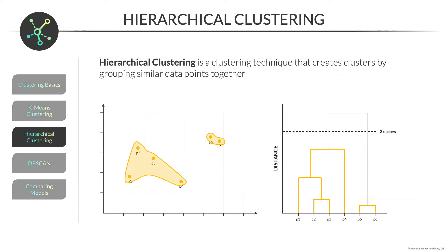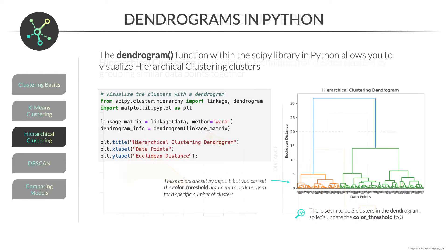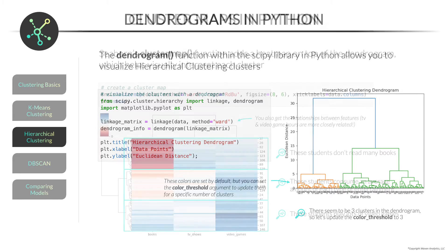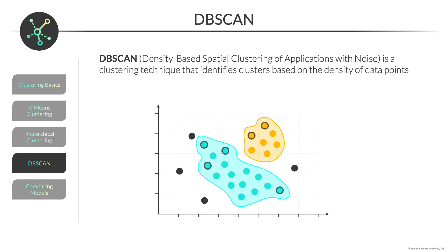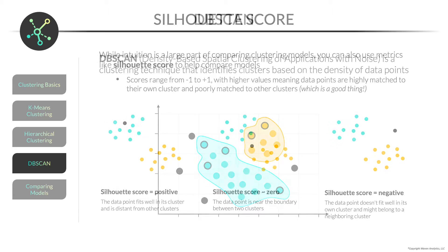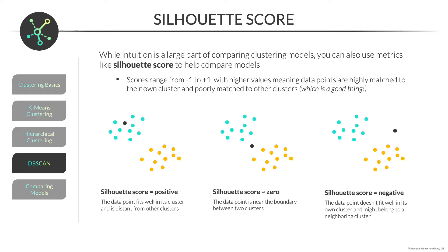Next, we'll cover hierarchical clustering, where we'll use dendrograms to identify clusters and cluster maps to interpret them. Finally, we'll use DBSCAN to detect clusters and noise points, and evaluate the models using their silhouette scores.